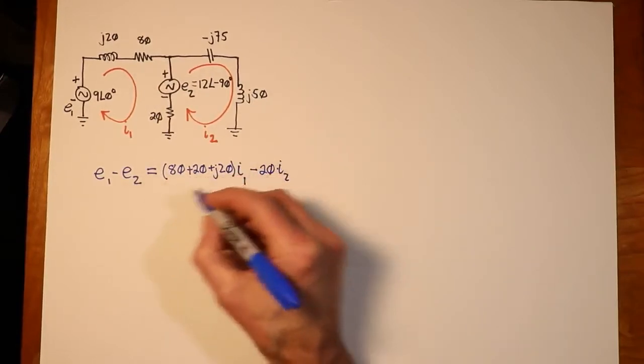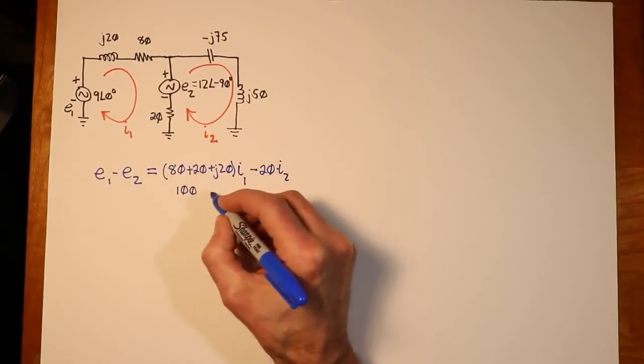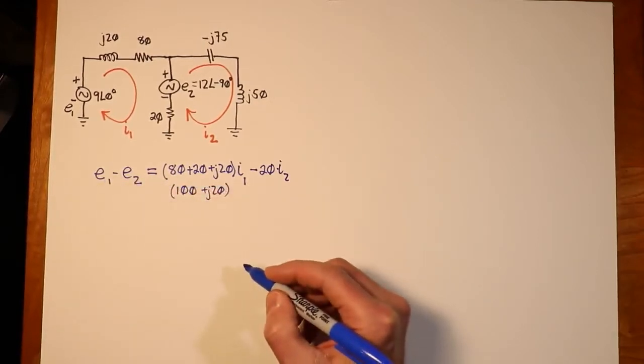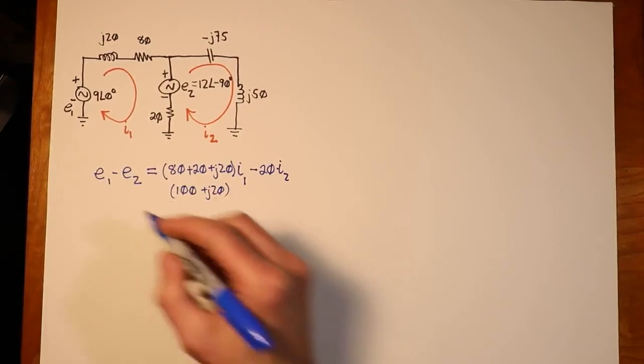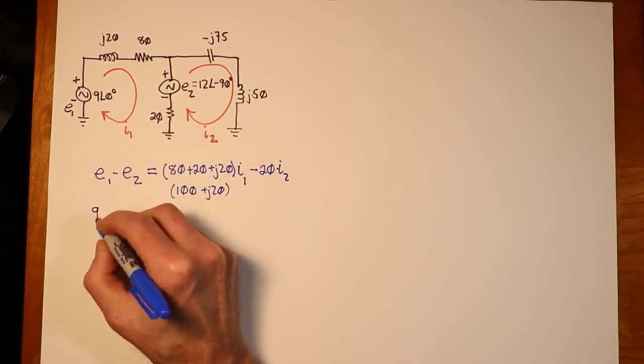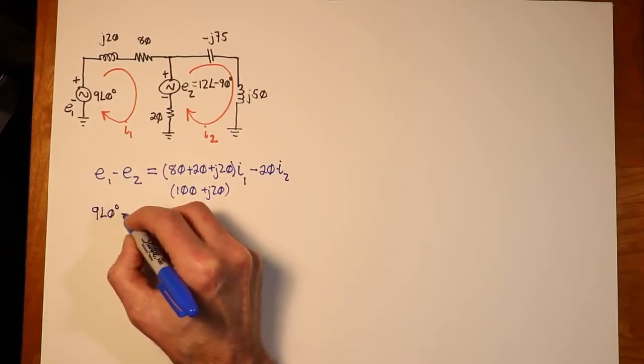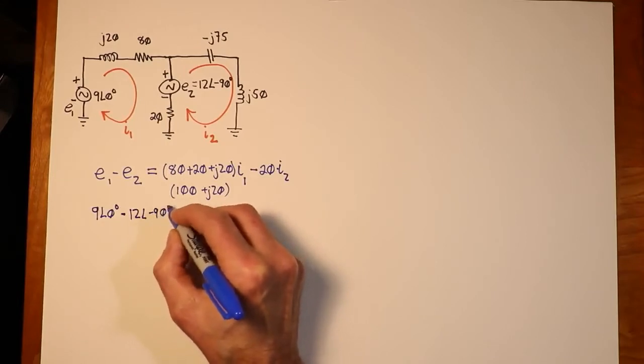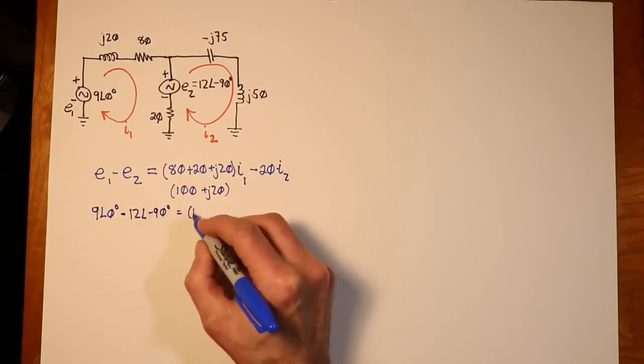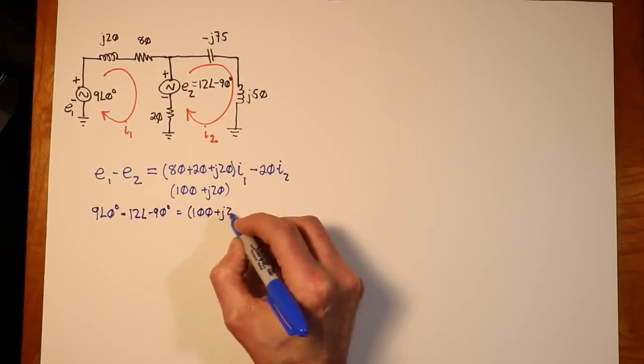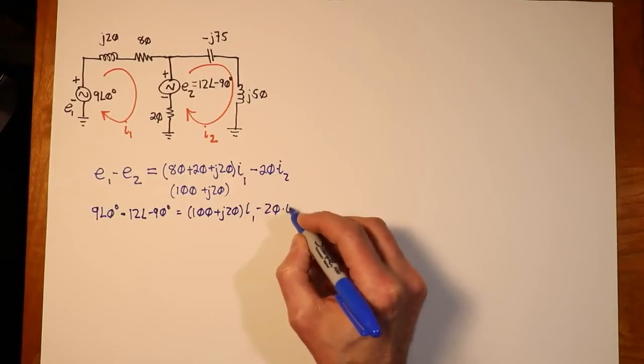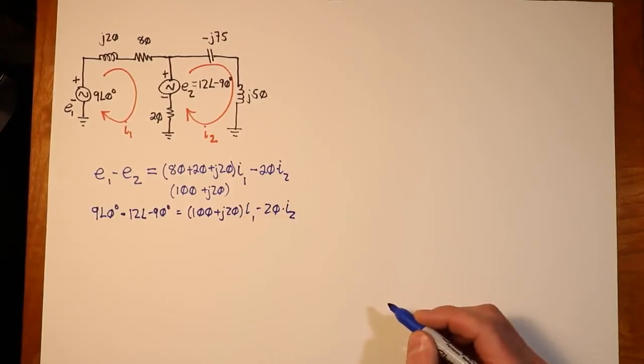And then we ask, is there anything in this loop that's also in another loop? Now, in this case, we only have one other loop, I2. So, that is obviously fighting. Remember, we said it was I1 minus I2 as far as the drop across the 20. So, that shows up as a negative 20 ohms times I2. We simplify this as 100 plus J20. We plug in the values for E1 and E2, and we will wind up with 9 at an angle of 0 minus 12 at an angle of minus 90 equals 100 plus J20 times I1 minus 20 I2.